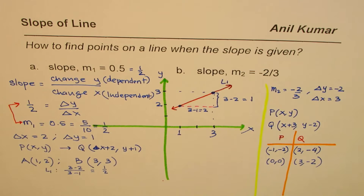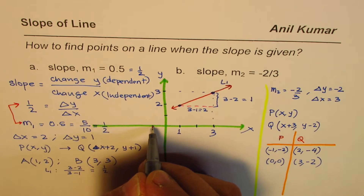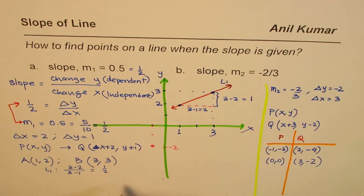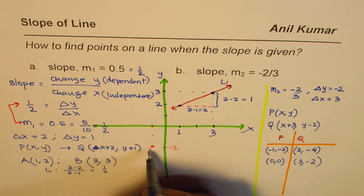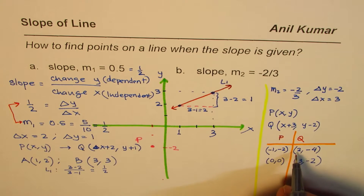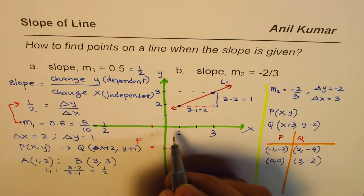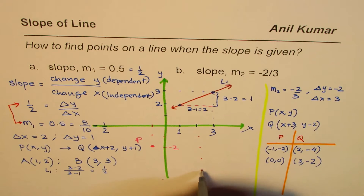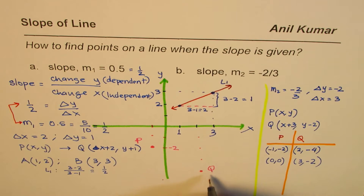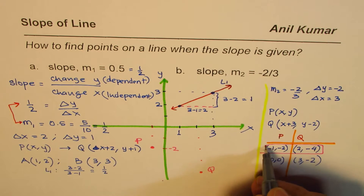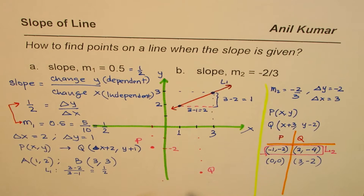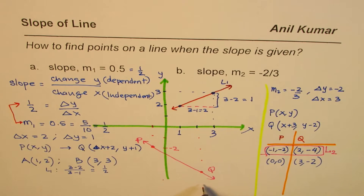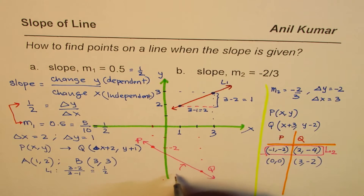Let's plot these and check. Point P at (minus 1, minus 2) — go minus 1 along x and down 2 units. Point Q at (2, minus 4) — go right to 2 and down to minus 4. If we join these two points we get a line, which we'll call L2.